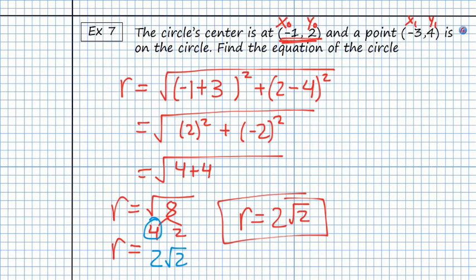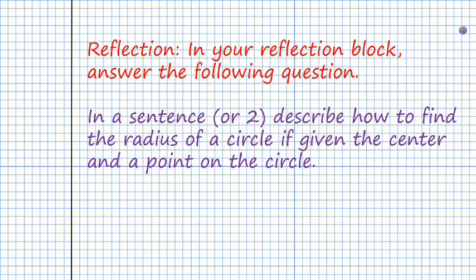So as you can see this is just taking some ideas that we've already known, our Pythagorean theorem, our distance formula, and now our circles, and we're kind of tying them together so we see how these objects are related. So your reflection today is going to be in a sentence or two describe how to find the radius of the circle if given the center and a point on the circle. Have a wonderful day, if you have any questions let me know, goodbye.